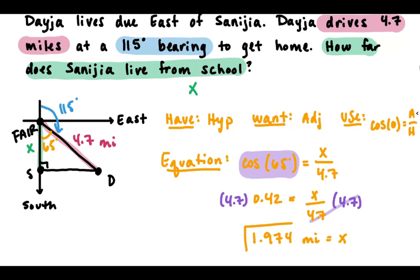The decimal ended after three places, so we could round that to just 1.97 — also fine. Hopefully that refreshes your memory of what you learned yesterday. Go ahead and give the try-then-check problems a go.